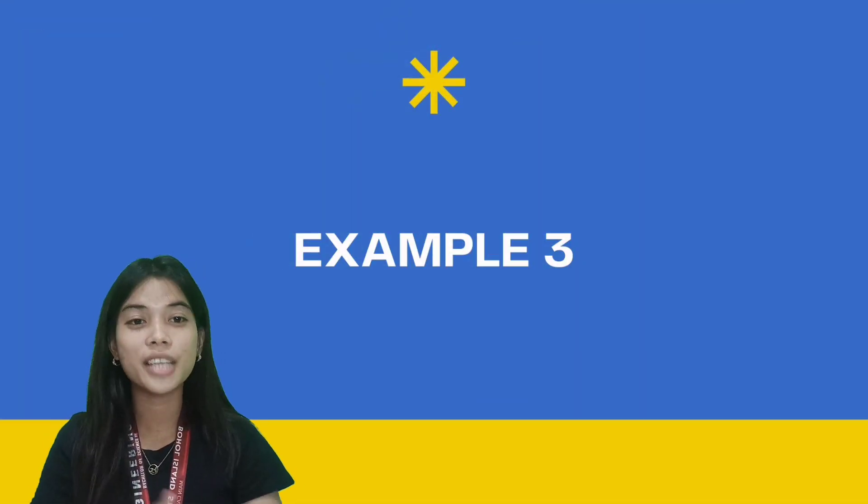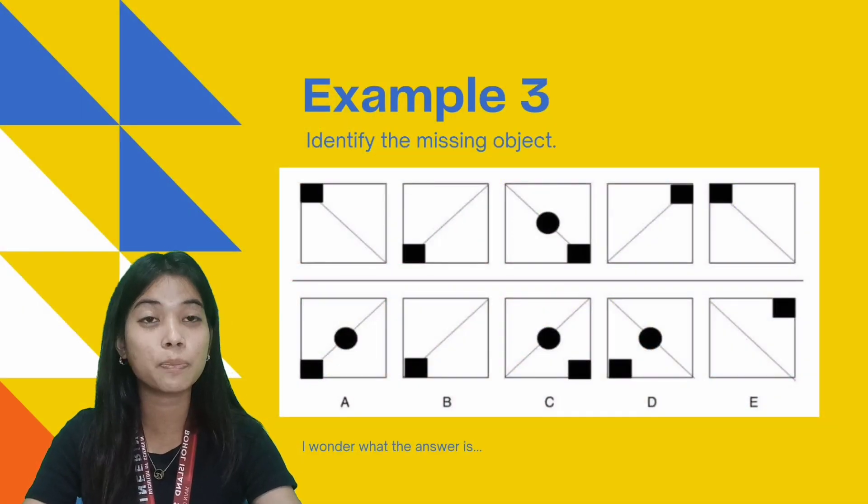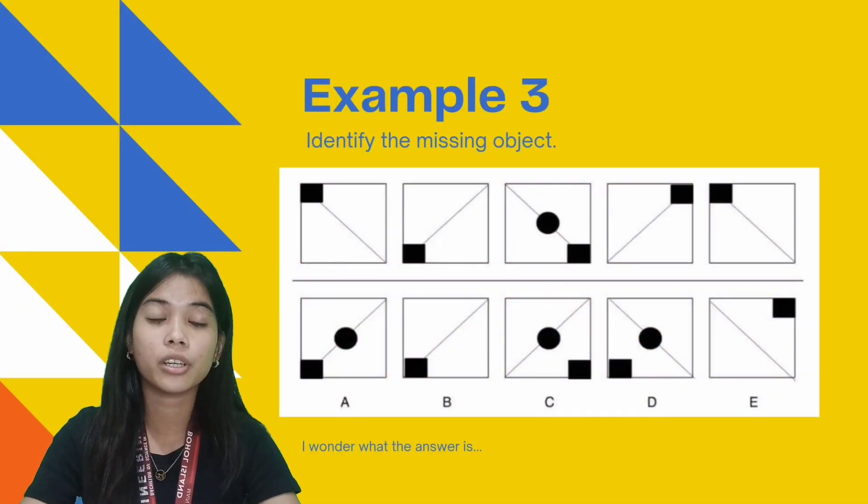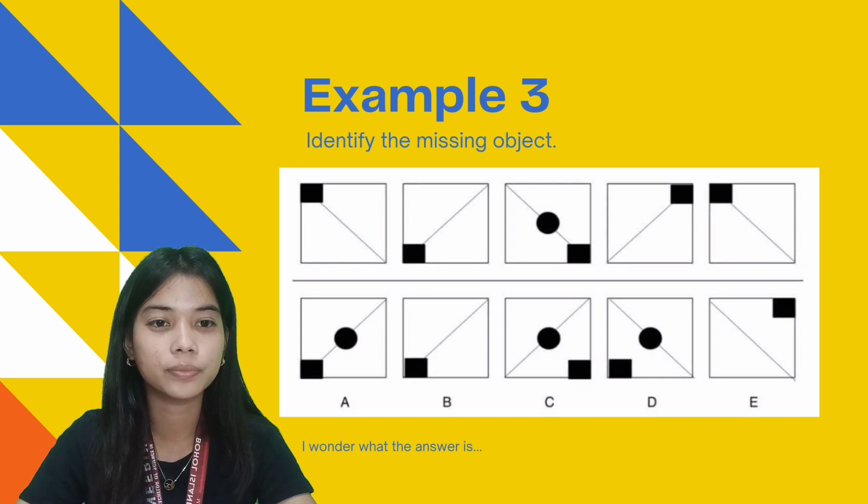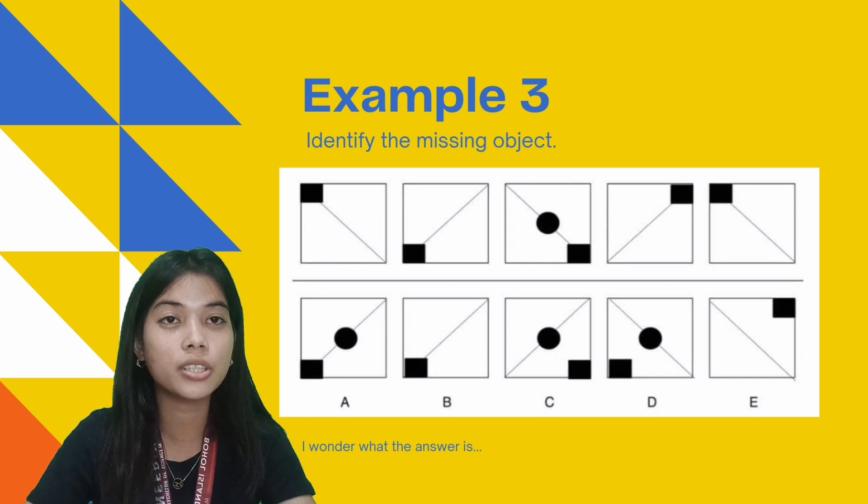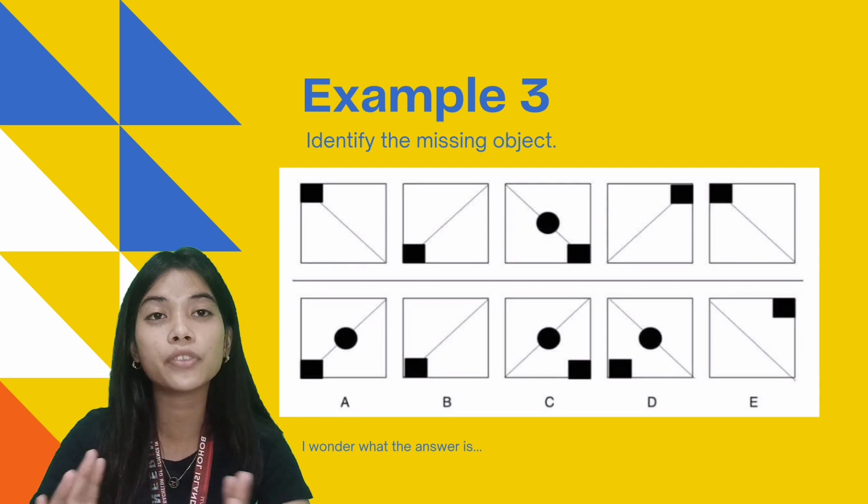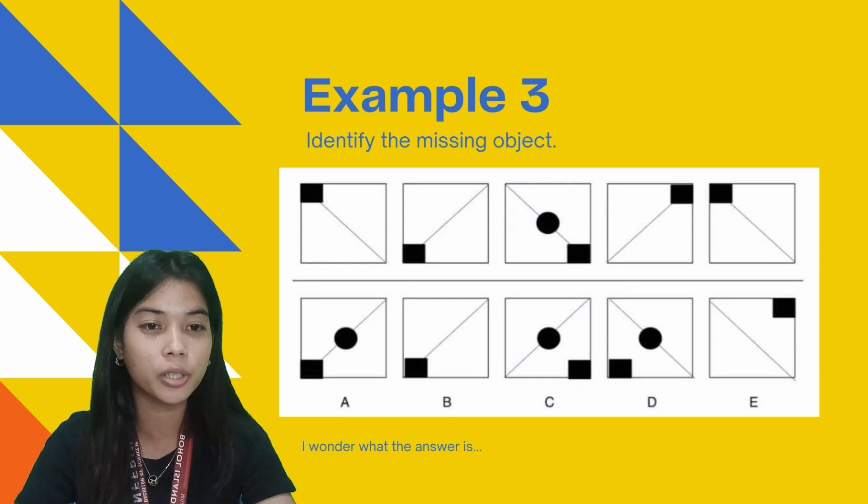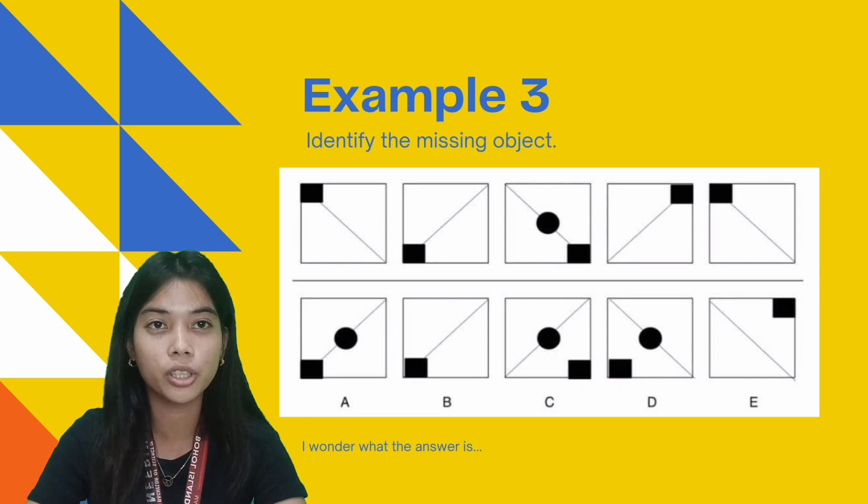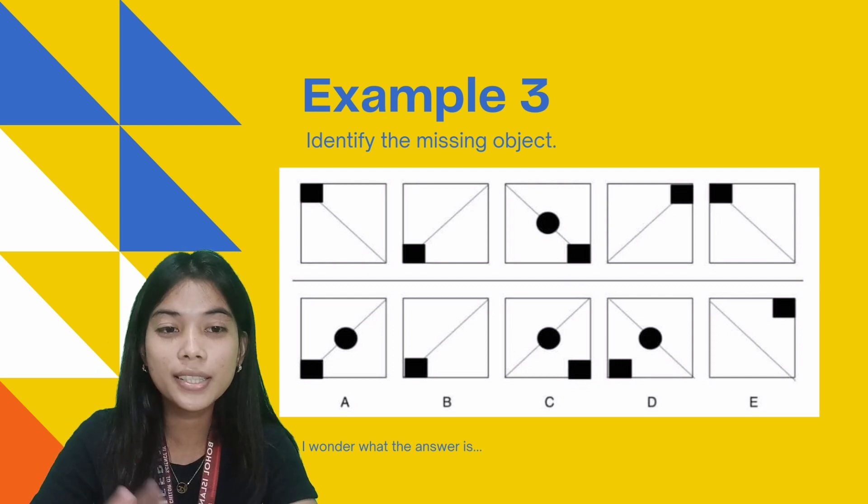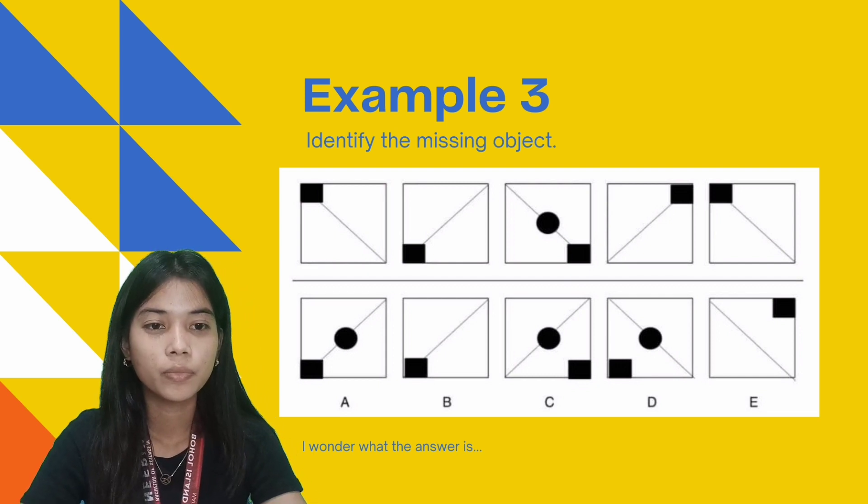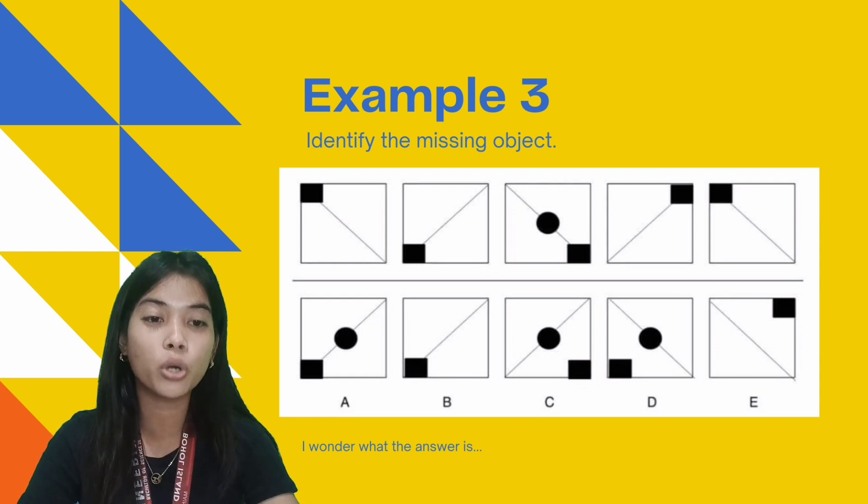For the third example, we have three rules consistent in this pattern. We have here a diagonal line, a circle, and a square. The diagonal line changes direction from top left corner to bottom right corner, then from top right corner to bottom left corner with each turn. So, by observing the diagonal lines, we can say that in the next figure, its direction is from the top right corner to bottom left corner. So, A, B, and C are correct while D and E will be eliminated.